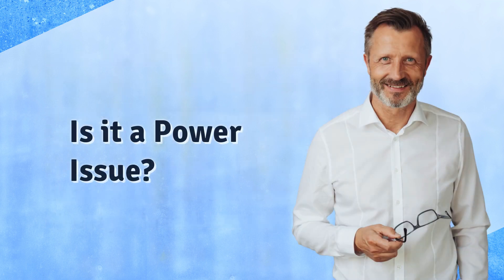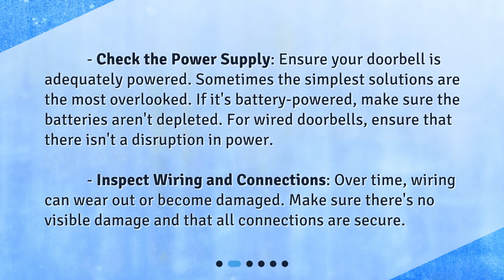Is it a power issue? Check the power supply — ensure your doorbell is adequately powered. Sometimes the simplest solutions are the most overlooked. If it's battery powered, make sure the batteries aren't depleted. For wired doorbells, ensure that there isn't a disruption in power. Inspect wiring and connections. Over time, wiring can wear out or become damaged. Make sure there's no visible damage and that all connections are secure.